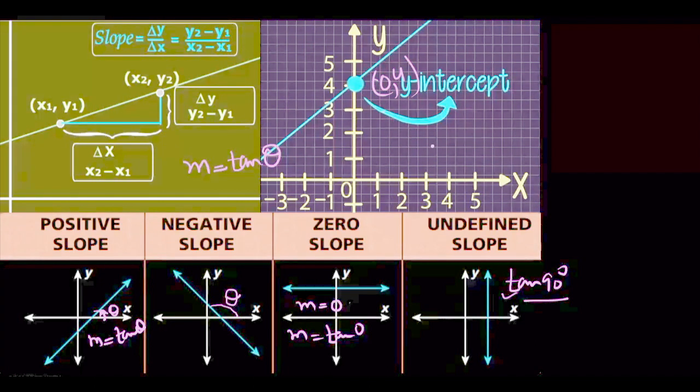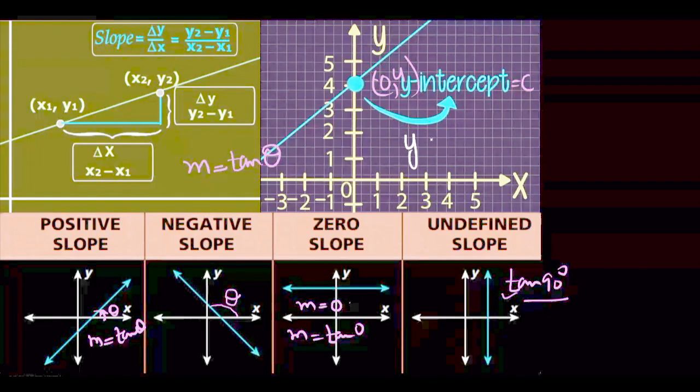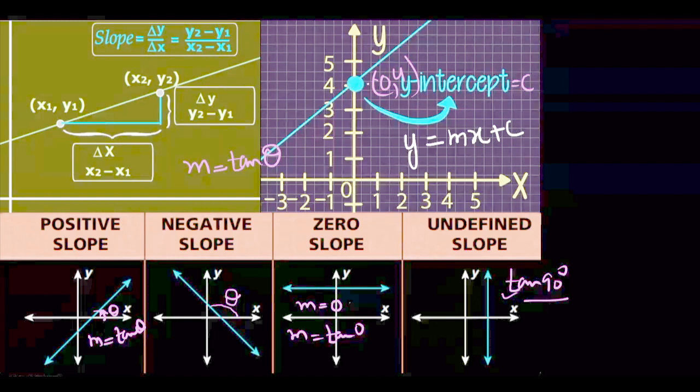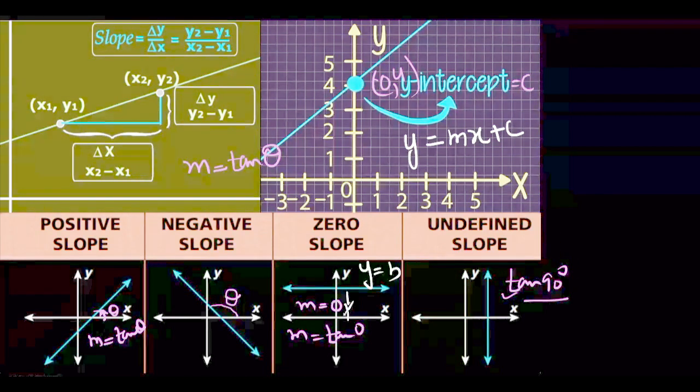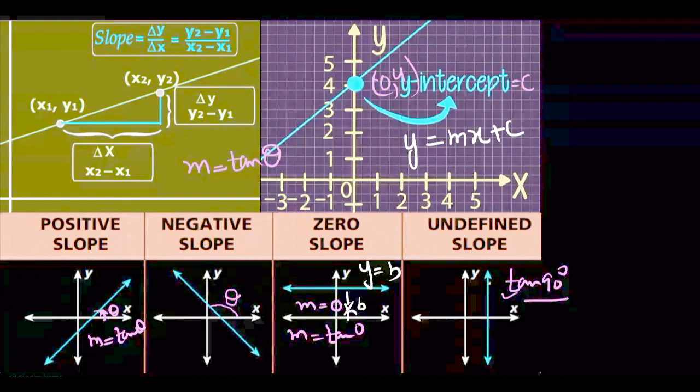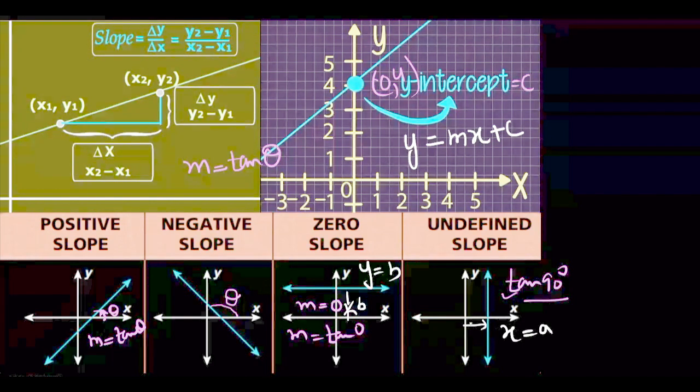We can write equation of straight line with the help of y-intercept and slope. Let y-intercept be c, then equation of straight line is y equal to mx plus c. When a line is parallel to x-axis, equation is y equal to p, where p is the distance. When parallel to y-axis, x equal to a.